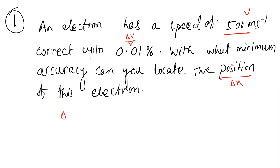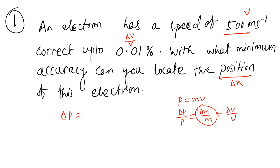To find the absolute uncertainty Δp, we write Δp = m·Δv. Since p = mv, we have Δp/p = Δm/m + Δv/v. Here we assume Δm = 0, so Δp = p·(Δv/v). The momentum p is found by multiplying mass times velocity.